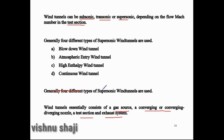Here are four examples of wind tunnel types: blowdown wind tunnels, atmospheric entry wind tunnels, high enthalpy wind tunnels, and continuous wind tunnels.